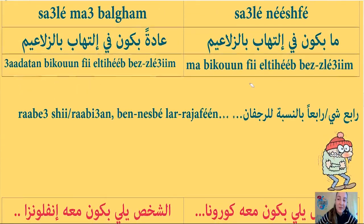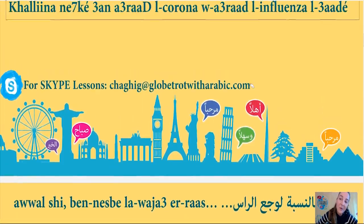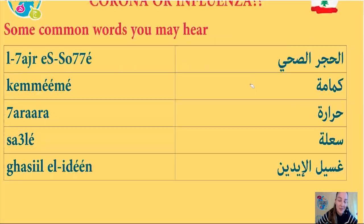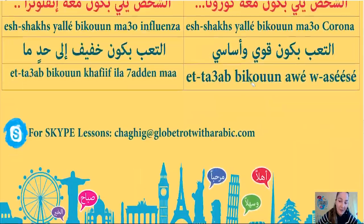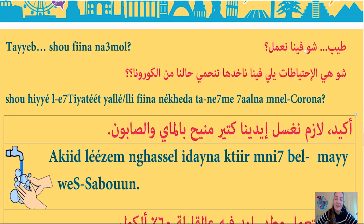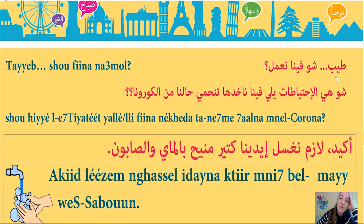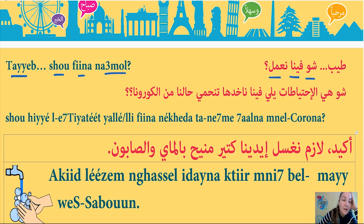As I told you, this is the continuation of the lesson we started the other day. Scrolling up, you'll notice I was talking about the symptoms related to the coronavirus — make sure you go do that lesson first. So as I mentioned, today we will talk about the precautions we can take to protect ourselves. I started with the question طيب شو فينا نعمل؟ — طيب means 'okay/all right,' شو means 'what,' فينا means 'we can,' نعمل means 'we do.' So: okay, what can we do?